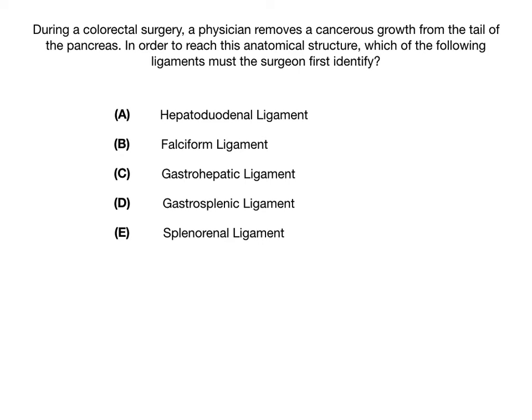During a colorectal surgery, a physician removes a cancerous growth from the tail of the pancreas. In order to reach this anatomical structure, which of the following ligaments must the surgeon first identify?